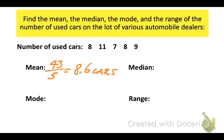Now, to find the median, the first thing we do is we put the numbers in order. So from smallest to largest, 7, 8, 8, 9, and 11. And the middle number appears to be, in this case, 8.